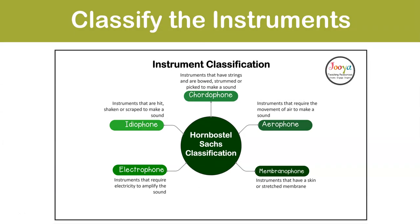The five main Hornbostel-Sachs categories are: aerophones, chordophones, idiophones, membranophones, and electrophones. An electrophone is an instrument that requires electricity to amplify the sound — please note a microphone is not an instrument, it is just a means to amplify the sound. An idiophone is an instrument that is hit, shaken, or scraped to make a sound. A chordophone is an instrument that has strings and is bowed, strummed, or picked. An aerophone requires movement of air to make a sound. A membranophone is an instrument that has a skin or stretched membrane.